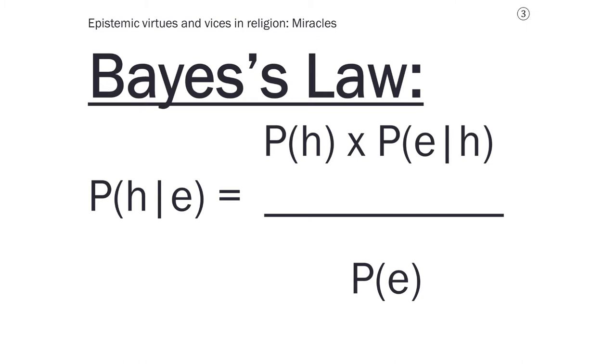Bayes' Law tells you that whenever you get some evidence relevant to a particular hypothesis, you can update your credence in that hypothesis by taking the product, multiplying your initial confidence in that hypothesis by the likelihood, and then dividing by the probability of the evidence in the first place. This gives us what is now called a posterior probability.